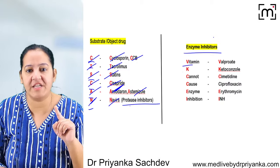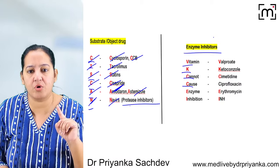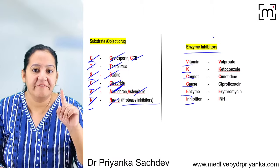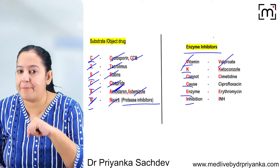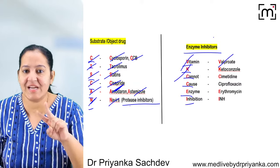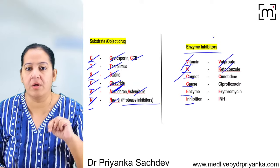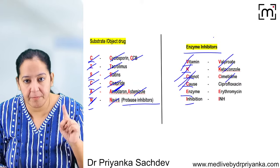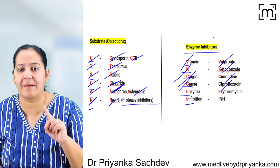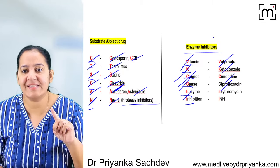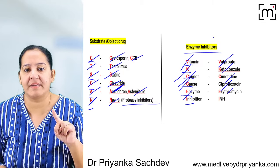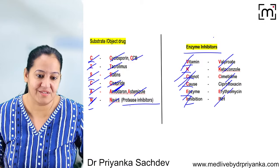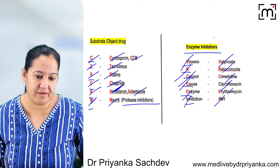The mnemonic for enzyme inhibitor drugs (green) is: Vitamin K Cannot Cause Enzyme Inhibition — V = valproate, K = ketoconazole, C = cimetidine, C = cisapride, E = erythromycin, I = isoniazid (anti-TB drug).